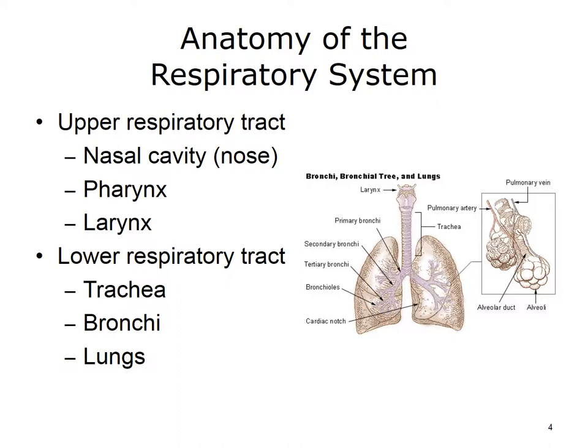Now let's take a closer look at the anatomy of the respiratory system. The nasal cavity, or nose, is the external portion of the respiratory tract. The nose filters small particles out of the air and warms and humidifies the air breathed. It is also the primary organ for the sense of smell.